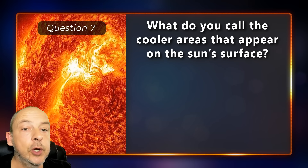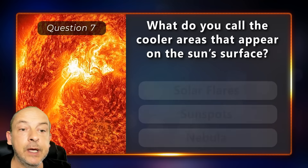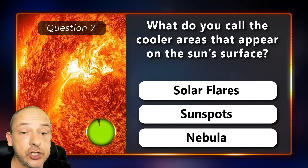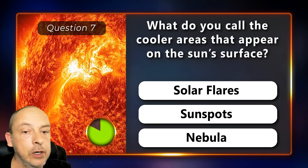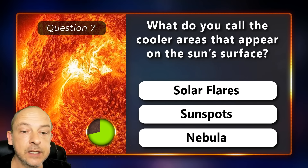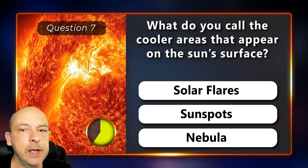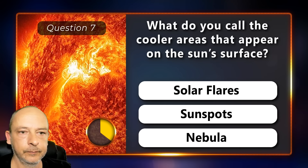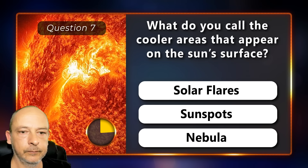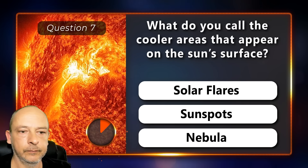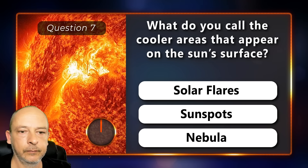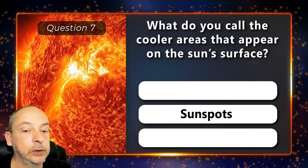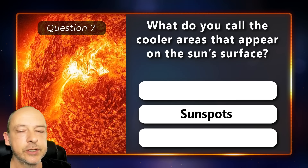What do you call the cooler areas that appear on the sun's surface: solar flares, sunspots, or nebula? They are called sunspots.